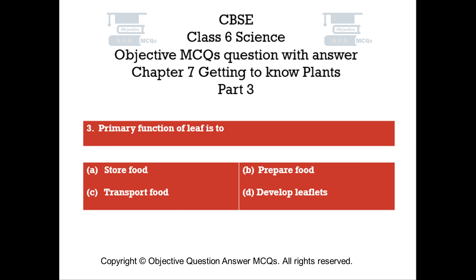Question number 3. The primary function of a leaf is to. Option A: Store food. Option B: Prepare food. Option C: Transport food. Option D: Develop leaflets.